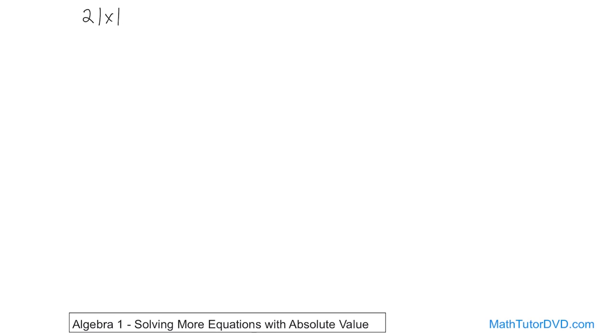So if you have 2 times the absolute value of x is 18, how do you go about solving that? Well, we want to get this all by itself, and we're multiplying it by 2. So what we need to do is the opposite of multiplication, which is division.